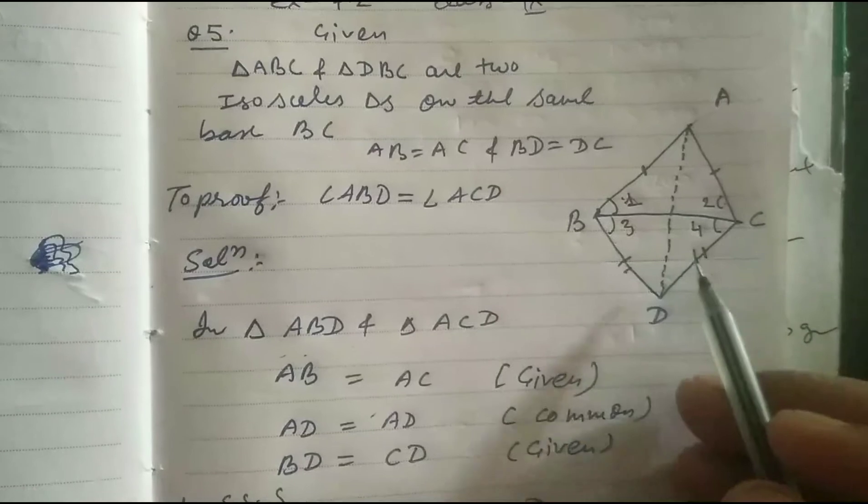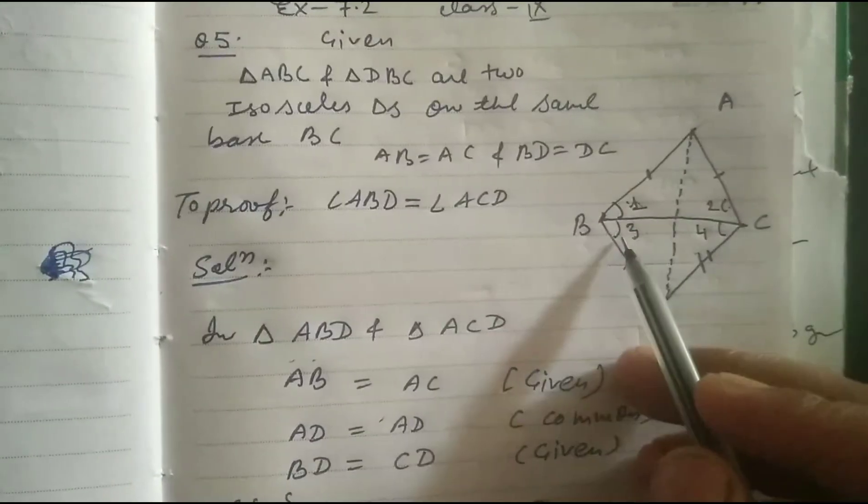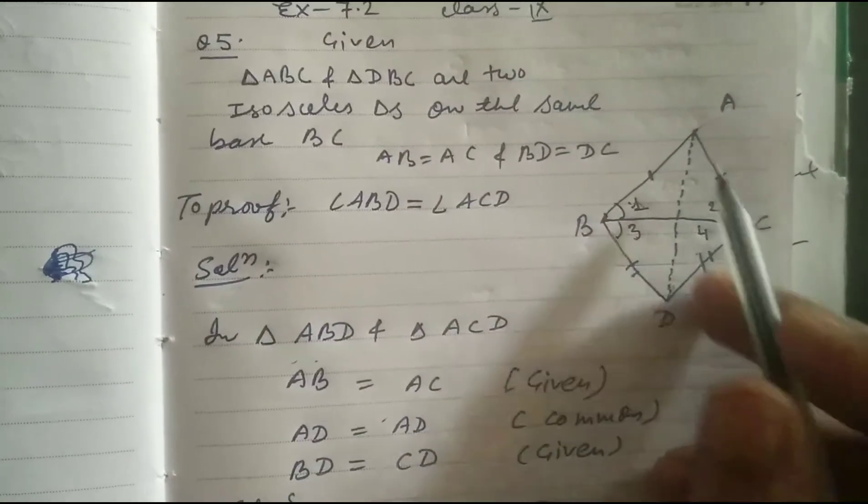This is angle 1 plus angle 3, angle 2 plus angle 4. Triangle ABD, triangle ACD.